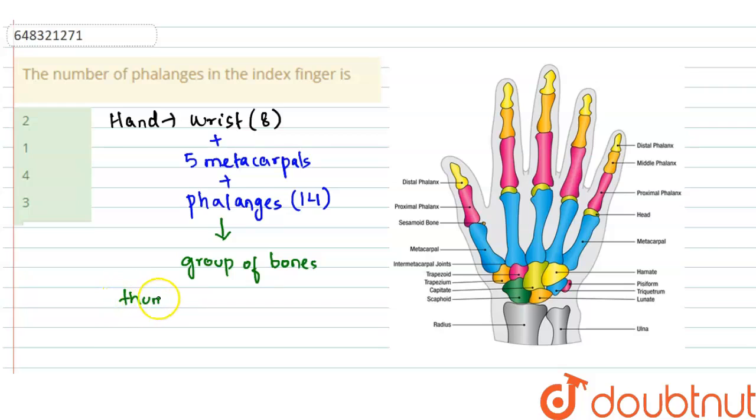In case of thumb, as we can see, there are only two types of phalanges. The thumb consists of only two type of phalanges, whereas other fingers have a total of three phalanges.